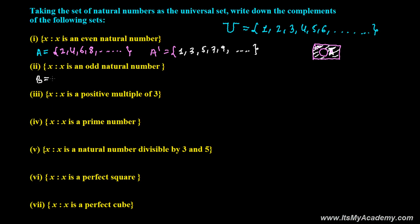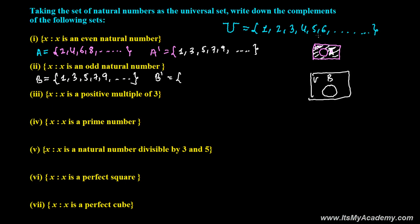Now set B, where B is the set of odd natural numbers: 1, 3, 5, 7, 9, and so on. B complement means all elements except those in B. So we skip 1, take 2, skip 3, take 4, skip 5, take 6, skip 7, take 8, and so on. So the complement of B consists of all even numbers: 2, 4, 6, 8, and so on.